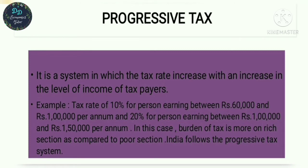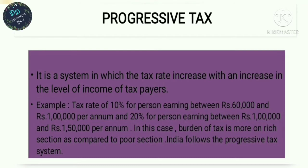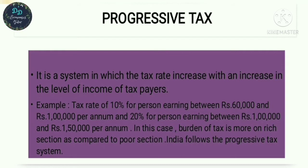The next is progressive tax system. It is a system in which the tax rate increases with an increase in the level of income of taxpayers. For example, a tax rate of 10% applies to a person earning between ₹60,000 and ₹1,00,000, and 20% for persons earning between ₹1,00,000 and ₹1,50,000 per year.